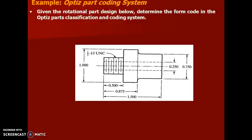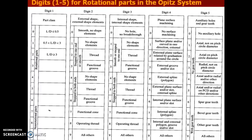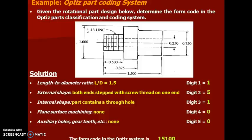Having understood these things, you will now be able to write a code for a given structure. Please refer to the OPITZ system and try to write a code for the shown example. Pause here and write the code. This is the code which you should have generated — it is self-explanatory. Hope you understood the concept of Group Technology. Thank you.